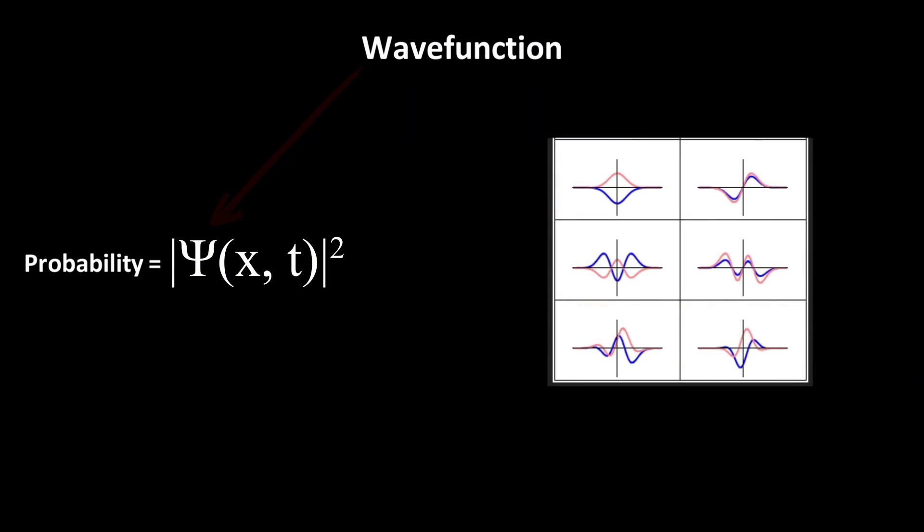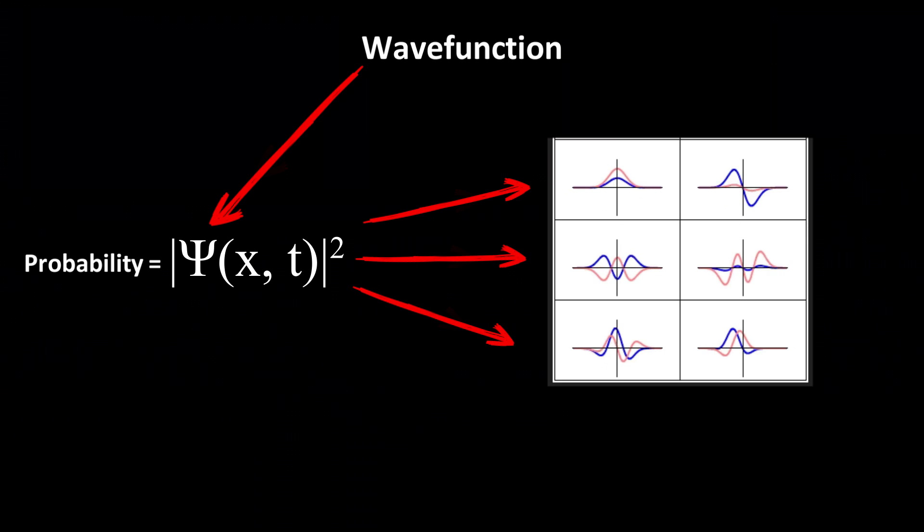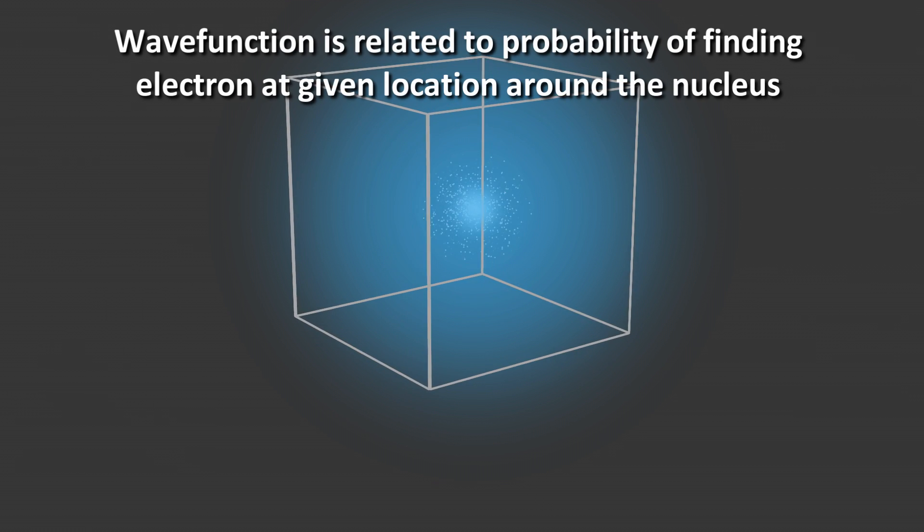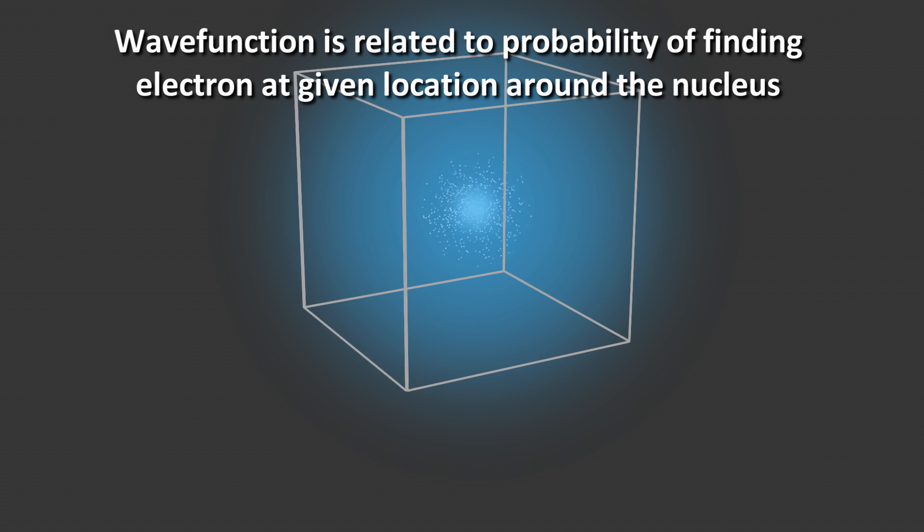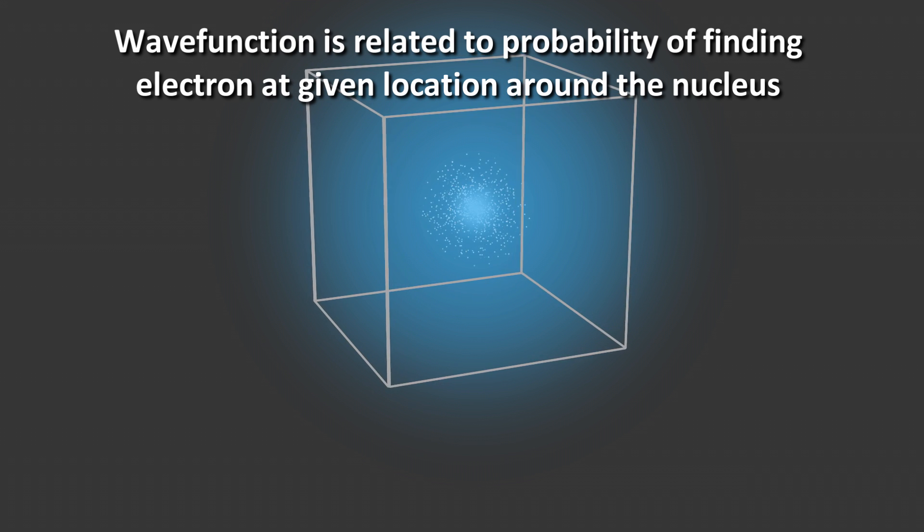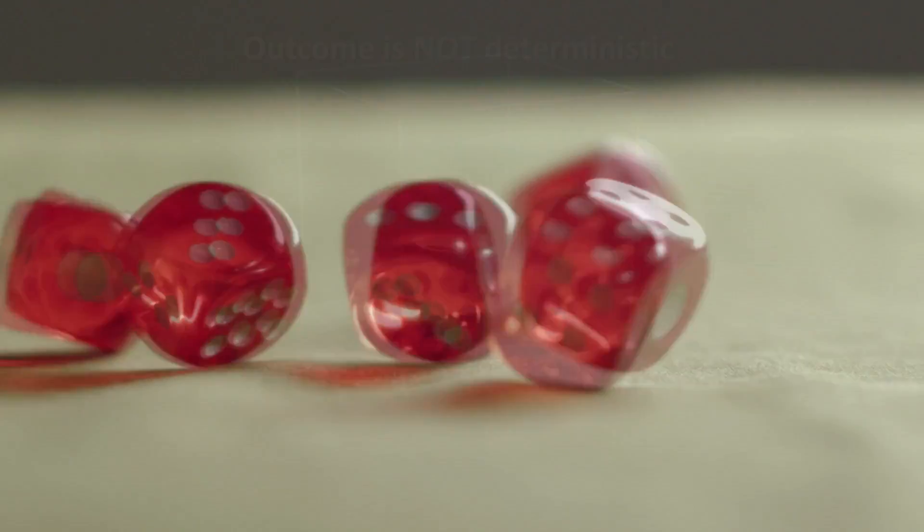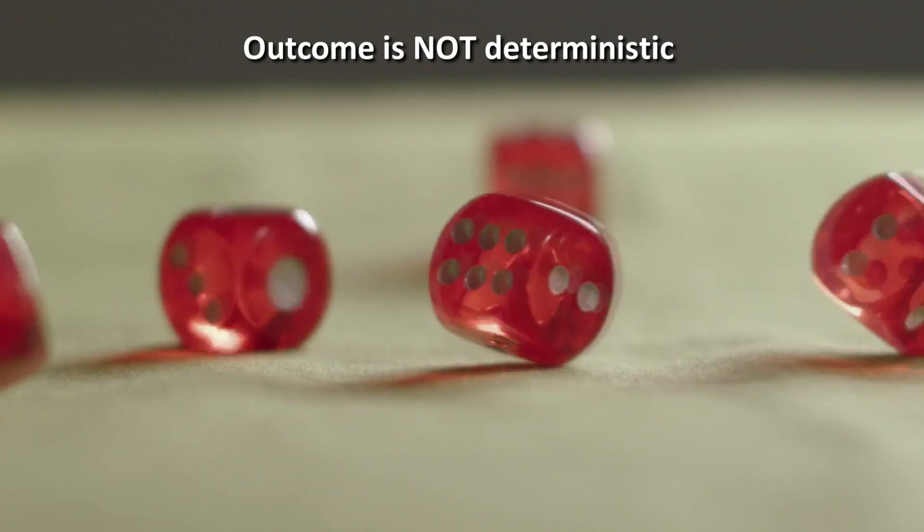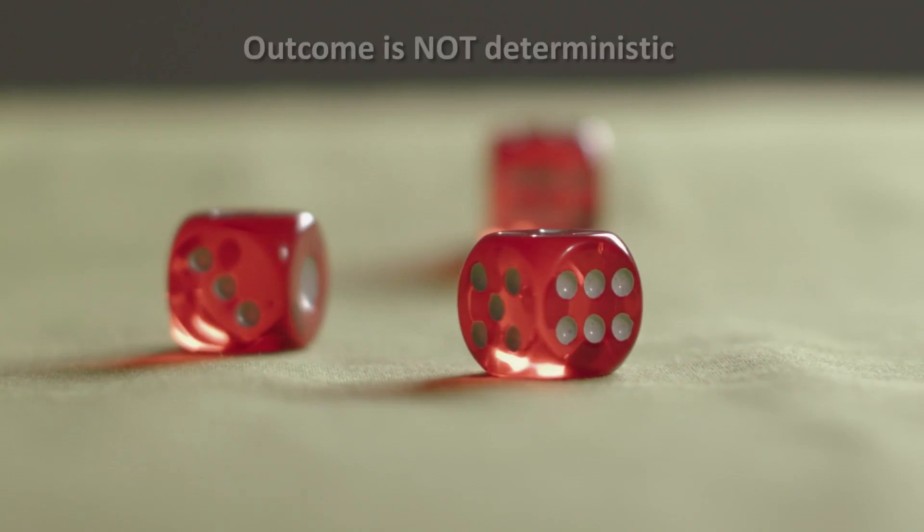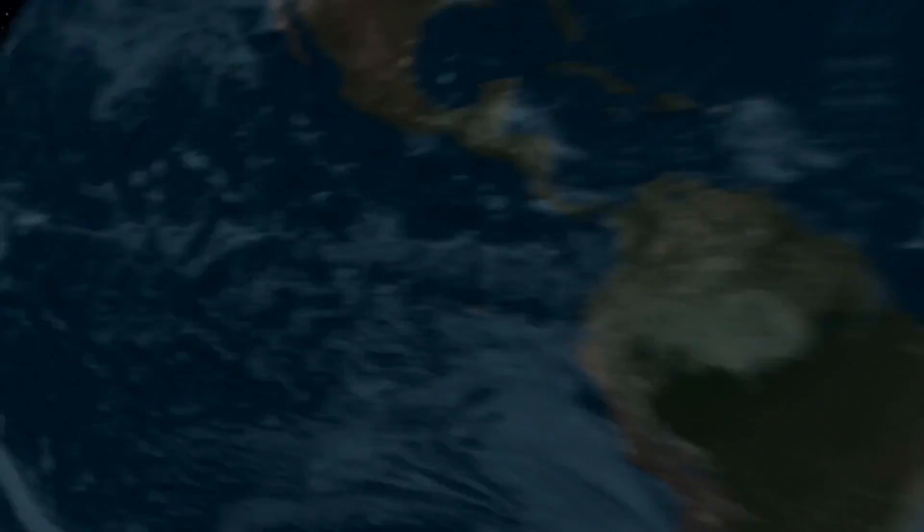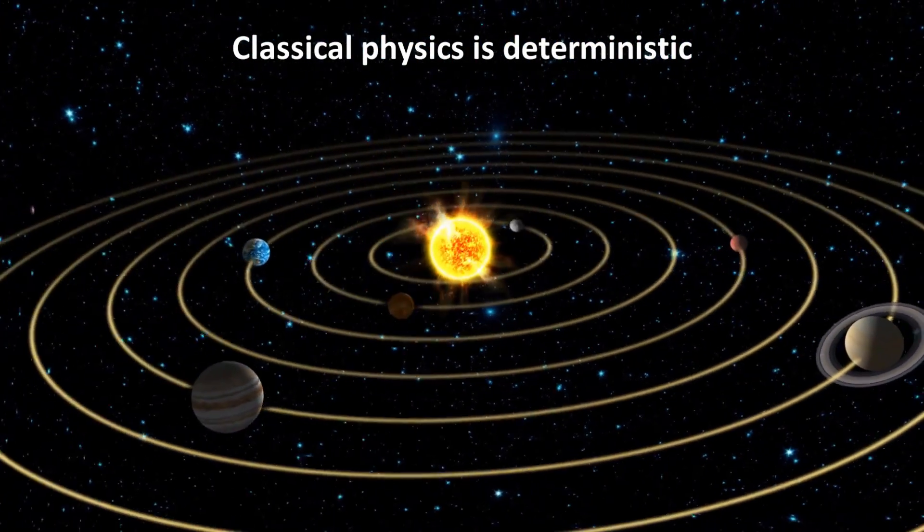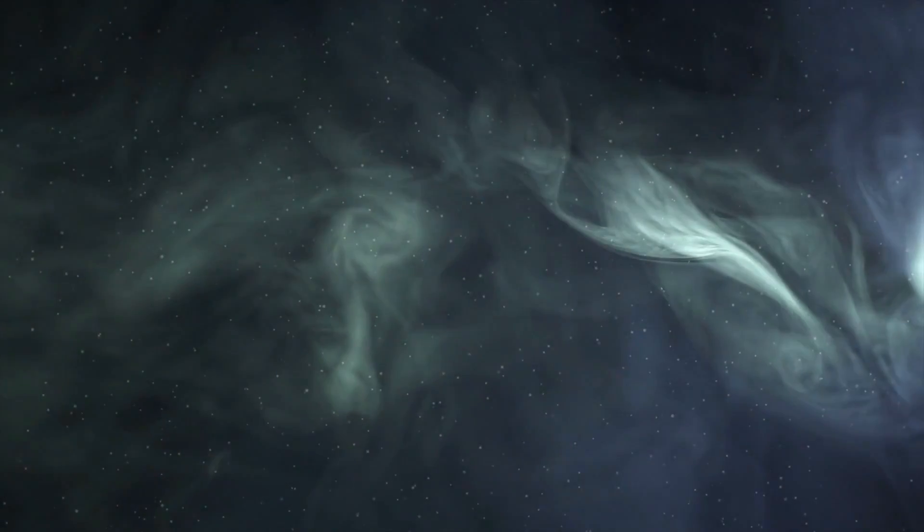Another big departure from classical mechanics is the idea of probability. The Schrodinger equation has something called a wave function. The wave function of a particle is related to the probability of finding the particle in a given location, if you were to measure it. Prior to measurement, we cannot know in advance where it will be. So the outcome is not deterministic, only the probabilities of the alternative possible outcomes are. This lack of determinism is a complete departure from classical physics, where if you know all the forces acting on a particle, you could predict its path.